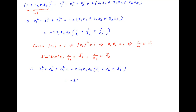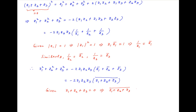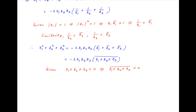This can be written as minus 2 z1z2z3 times the conjugate of z1 plus z2 plus z3. Now, we are given that z1 plus z2 plus z3 is equal to 0, which implies that the conjugate of z1 plus z2 plus z3 is also equal to 0. Using this result, the value of z1 squared plus z2 squared plus z3 squared is equal to minus 2 z1z2z3 times 0, which is equal to 0. And this is the required answer.